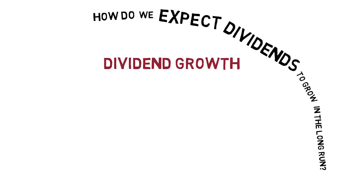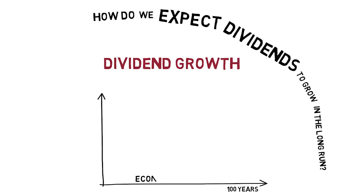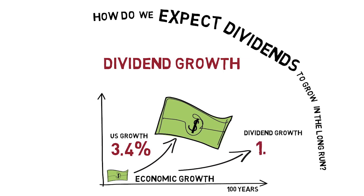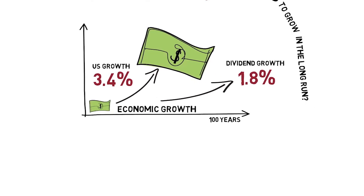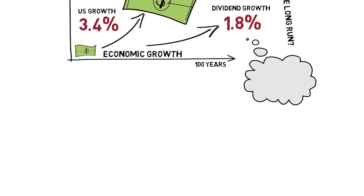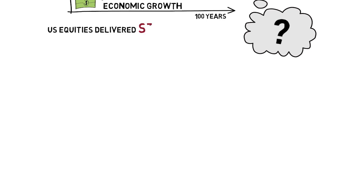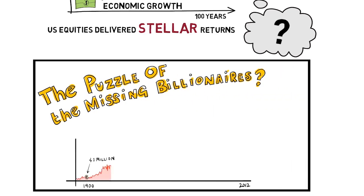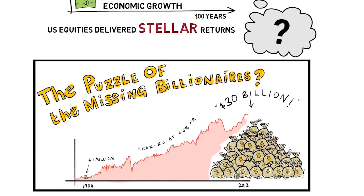Next, how do we expect dividends to grow in the long run? The biggest driver of dividend growth is economic growth, and over the past 100 years, real US growth was 3.4%. US real dividend growth, however, was only 1.8%, which at first I found surprising, especially knowing that US equities over the past 100 years delivered stellar returns, turning 1 million dollars in 1900 into over 30 billion dollars today.